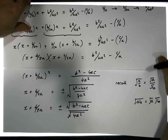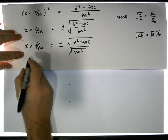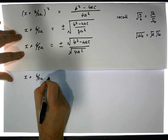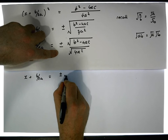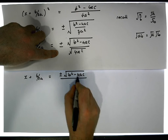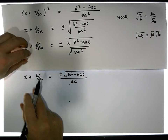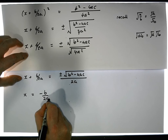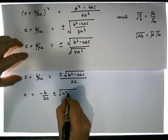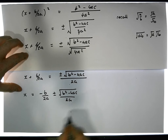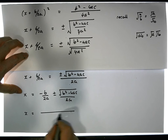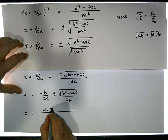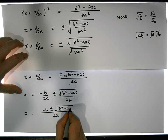The formula is starting to take shape now. We have x + b/2a equals plus or minus the square root of (b squared minus 4ac) all over 2a. Bringing the b/2a across to the right, we get x equals minus b/2a plus or minus the square root of (b squared minus 4ac) over 2a, which, with the common denominator of 2a, gives x equals minus b plus or minus the square root of (b squared minus 4ac), all over 2a.